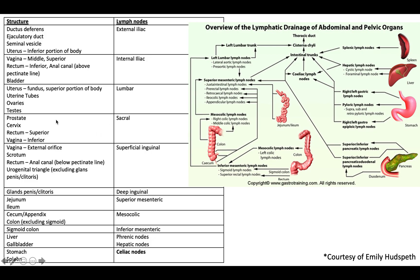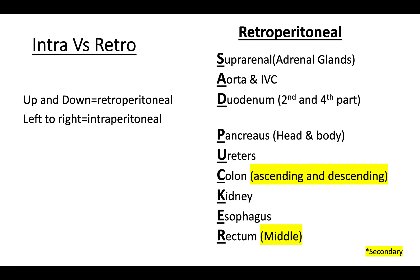Along with these other various drainages, I don't really have a super great way of memorizing them other than writing them down, just like with the brachial plexus, until you get it down. Figured I'd bring this up so we could have a complete lesson. This brings up another point: sometimes when you get into the mesenteries, it can get difficult understanding what's retroperitoneal and intraperitoneal.